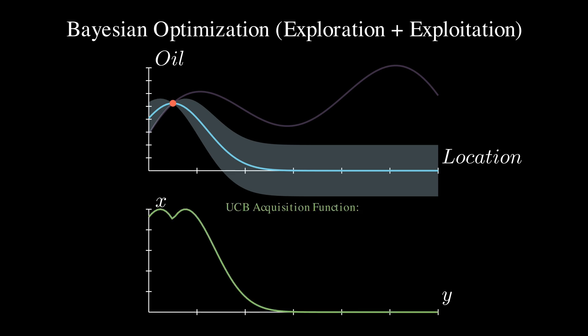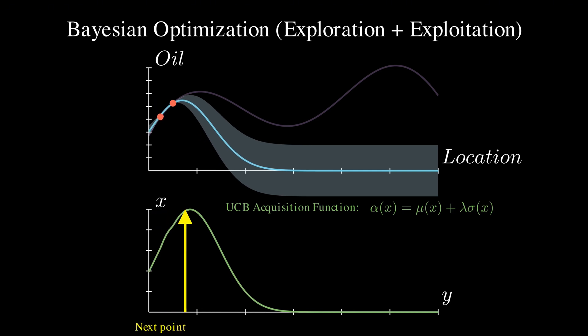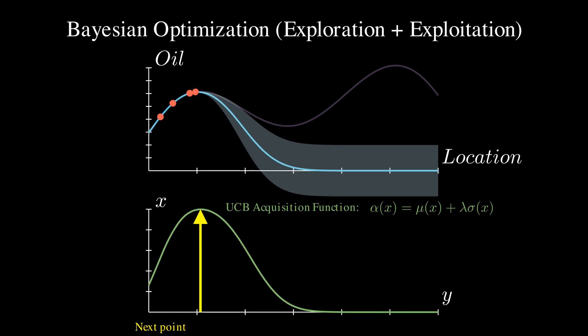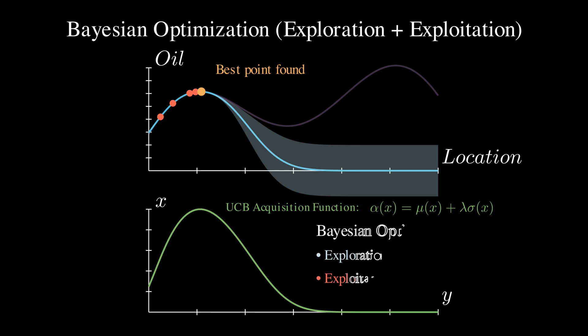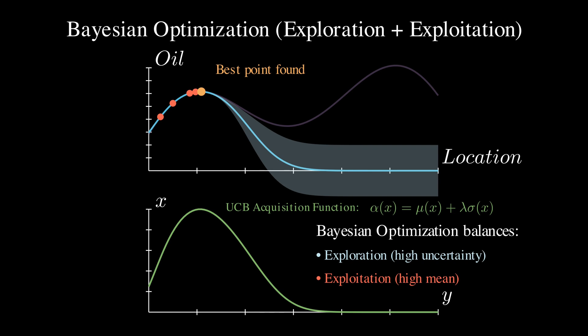The simplest acquisition function is the upper confidence bound, or UCB. Mathematically, it's alpha(x) = mu(x) + lambda * sigma(x). Here, mu represents our predicted oil content at location x, and sigma is our uncertainty. The lambda parameter controls how much we value exploration versus exploitation — higher lambda means more exploration, and lower lambda means more exploitation. If we follow the updates provided by this function, we'll gradually converge towards the true maximum. The UCB naturally shifts from exploration to exploitation as our uncertainty decreases in promising regions.